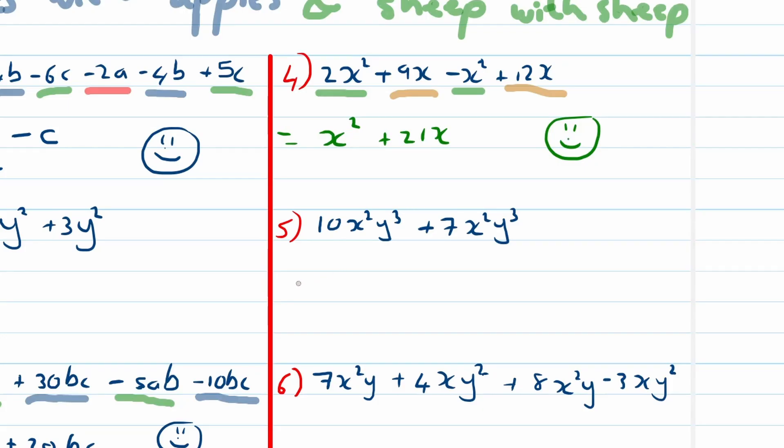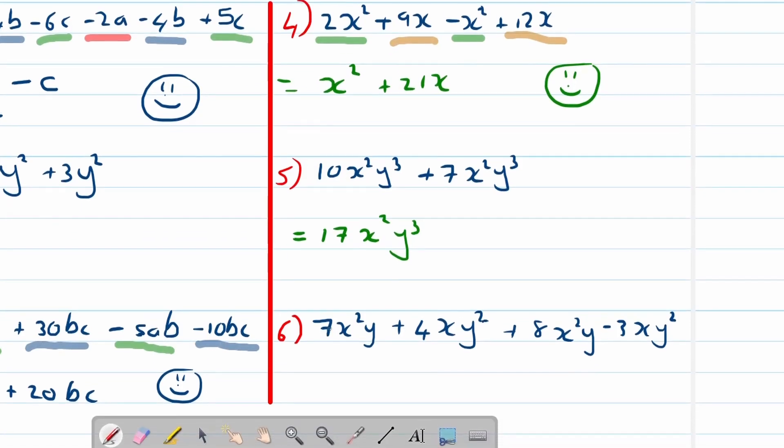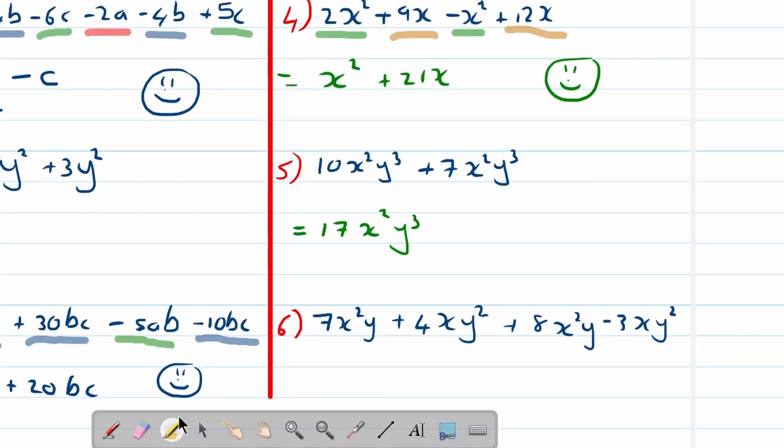Let's look at number five: 10x²y³ plus 7x²y³. You can easily see they're like terms, so this is then equal to 17x²y³.